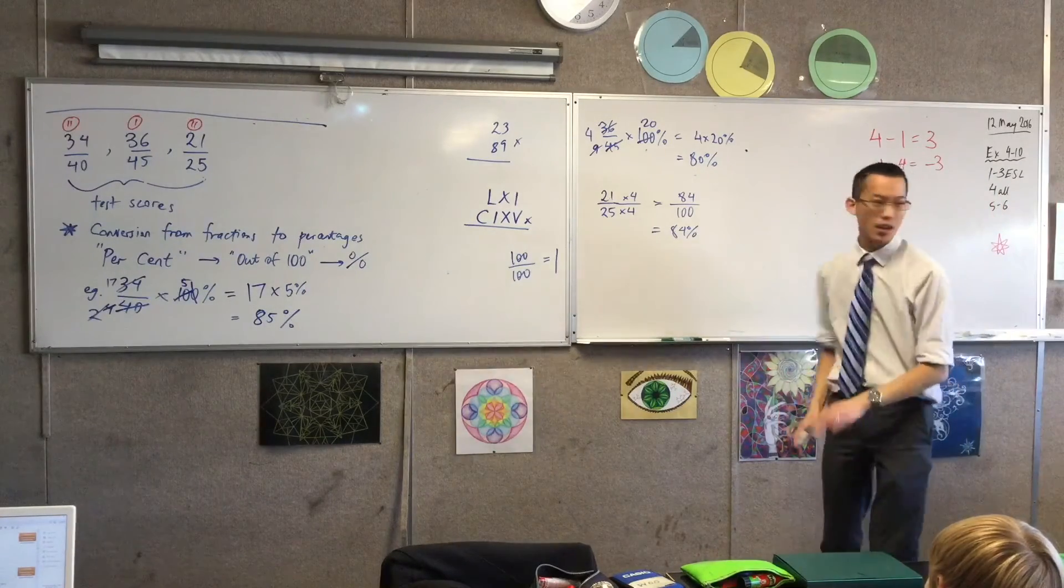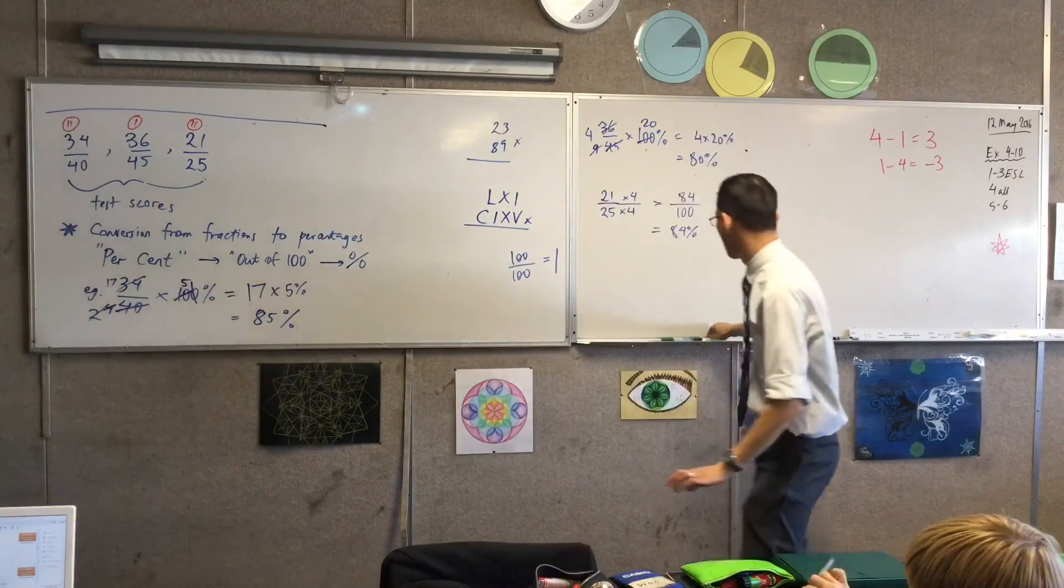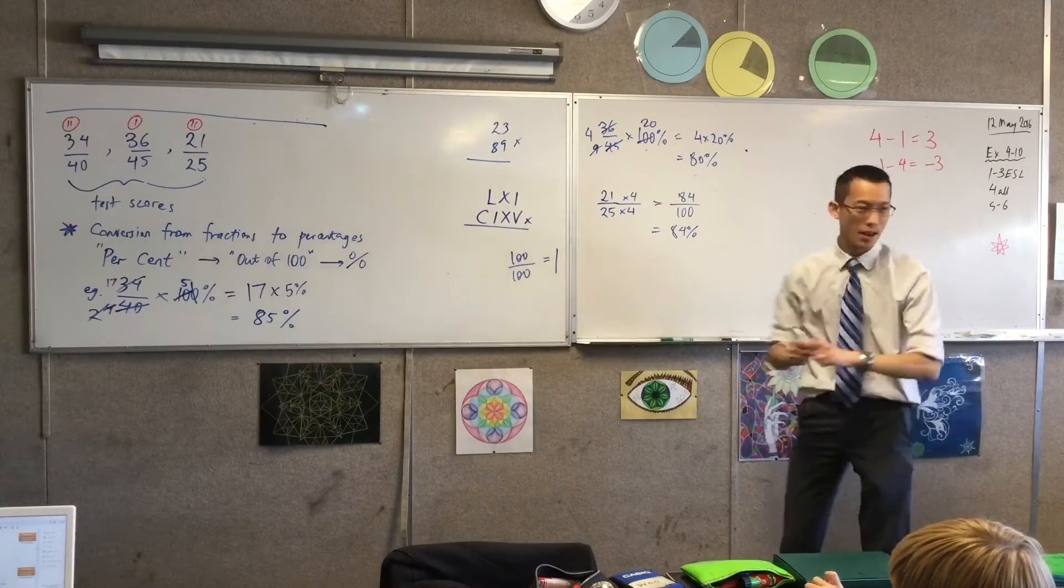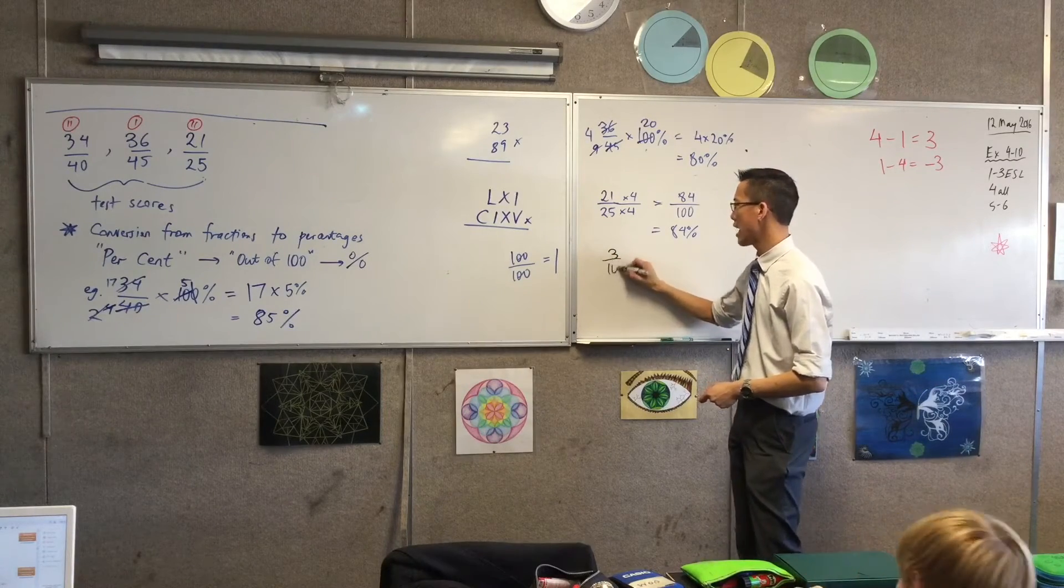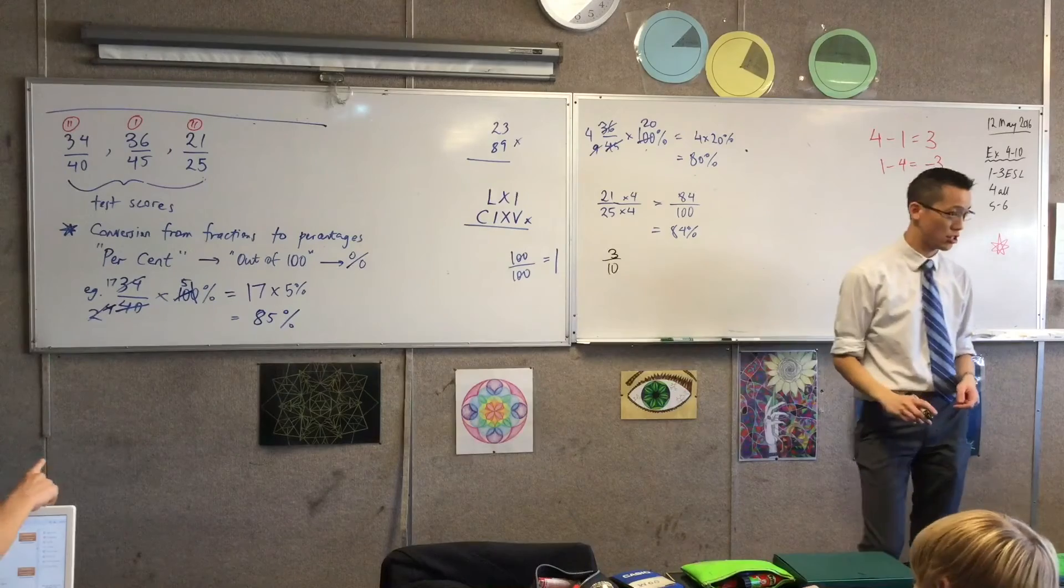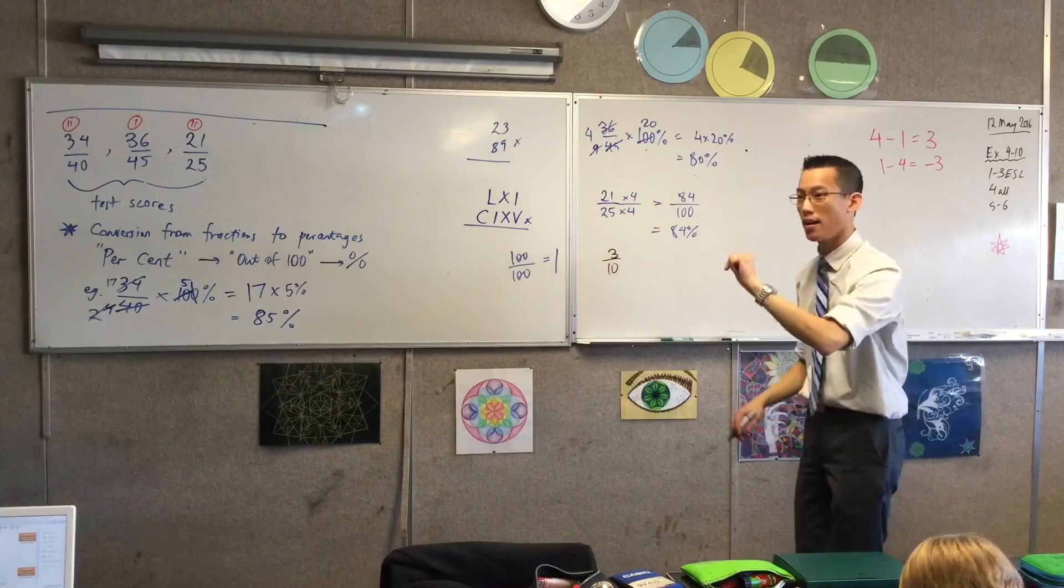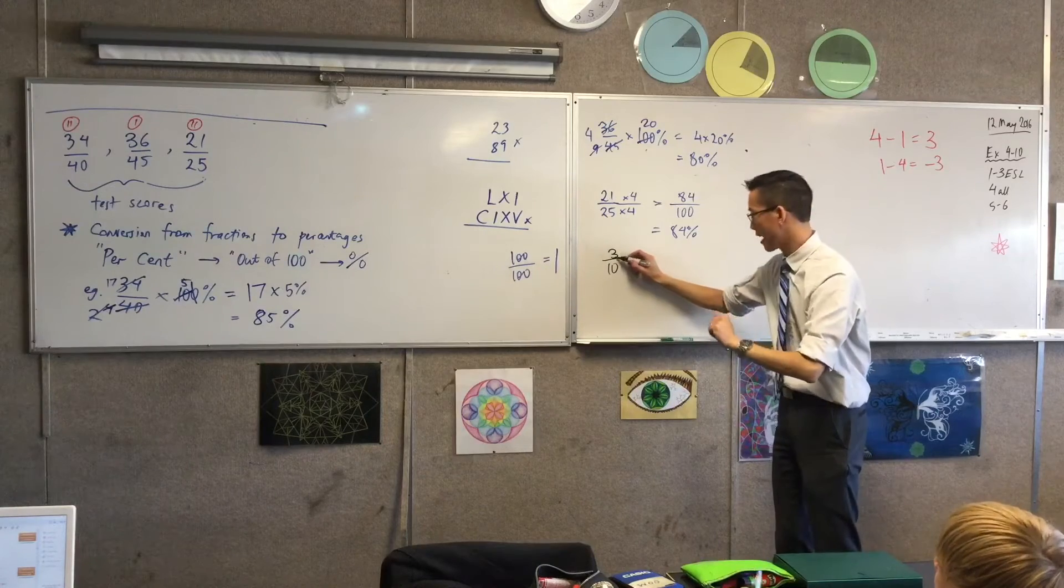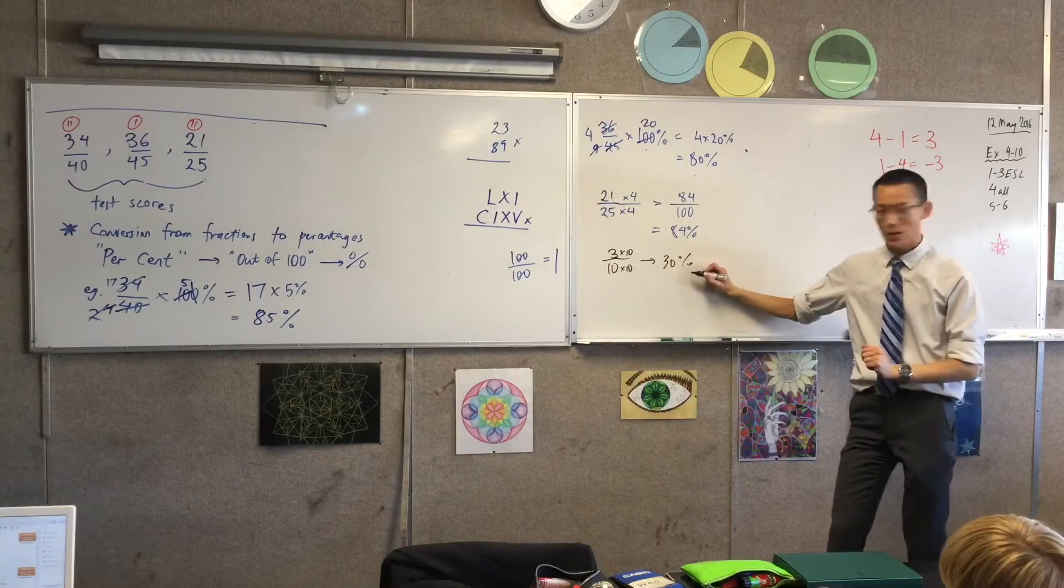And you can use this to your advantage. This was not part of the question, but suppose I quickly said to you, suppose I said, can you tell me 3 out of 10 as a percentage, right? This should be easy to do, right? What do I want the denominator to be? So I'm going to times by 10, times by 10. So this is clearly 30%, right?